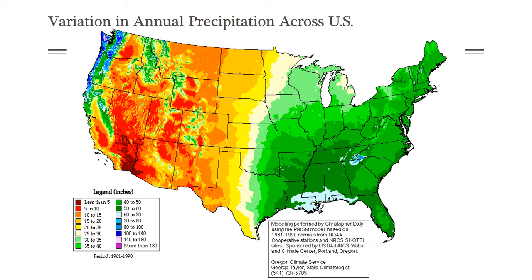Right up against the Rocky Mountains — in Montana, Colorado, eastern Wyoming, and eastern Colorado — you start to see short grass prairie, because the precipitation is pretty low, around 5 to 15 inches per year. That darker orange area along the east side of the Rockies on the map is where we see the short grass prairie.